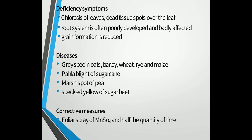Common diseases caused due to manganese deficiency are: first, gray speck in oats, barley, wheat, rye and maize. Second, pahala blight of sugarcane, where chlorotic spots appear as long streaks in young leaves and later turn red, coalesce to form long streaks from which the lamina may split. Third, marsh spot of pea, where brown or black spots or cavities develop on the internal surface of the cotyledons. Fourth, speckled yellow of sugar beet, characterized by intervenal chlorosis and leaf margins that may curl upward.